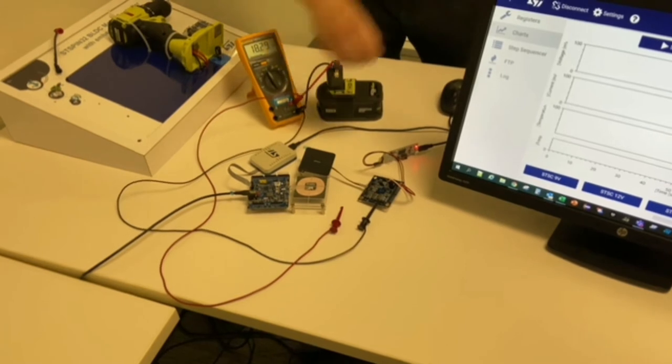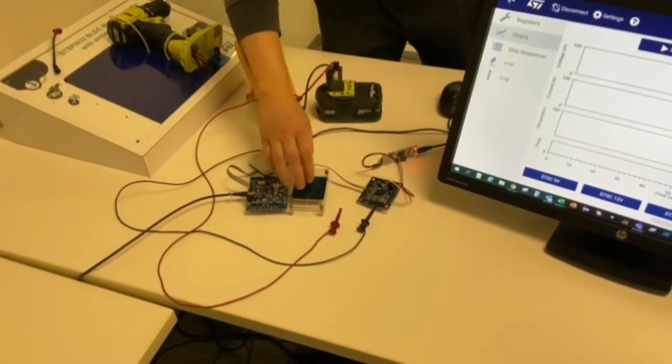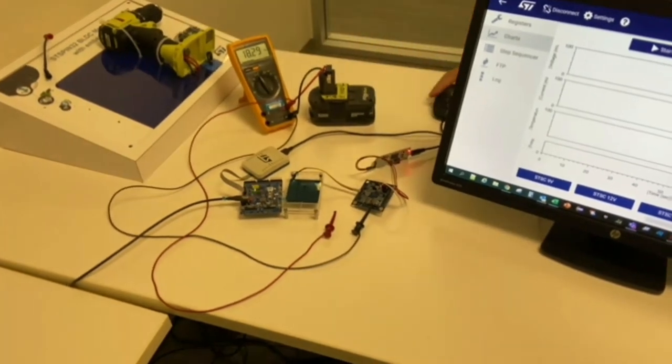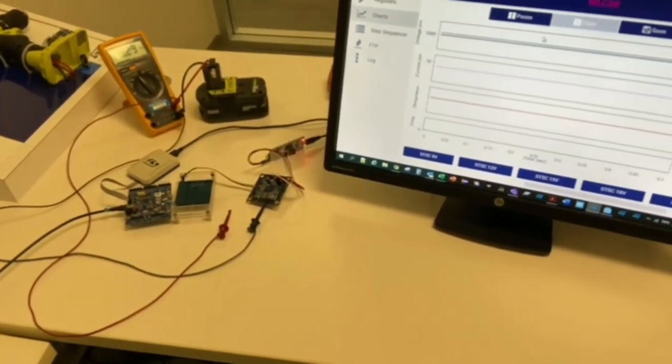We put the receiver coil on top of the transmitter coil, in this way the power transfer starts and the receiver board is now supplied and connected to the PC.